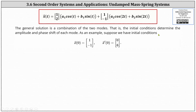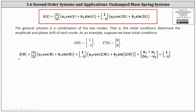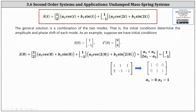As an example, suppose the initial conditions are x of zero equals the vector [1, negative one] and x prime of zero equals the vector [0, 6]. Beginning with x of zero equals [1, negative one], we substitute zero for T in the general solution and simplify the sines and cosines. The result is the two-by-one matrix with entries A one plus A two and two A one minus A two, which must equal [1, negative one]. Solving gives A one equals zero and A two equals one.